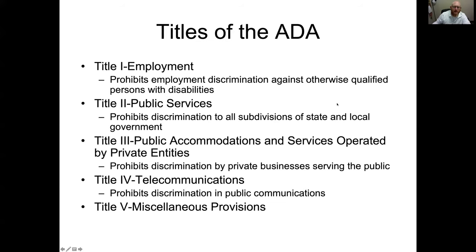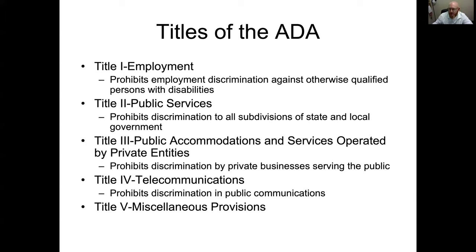There are five titles of the ADA. Title One covers employment — it prohibits employment discrimination for qualified people. Title Two covers public services — it prohibits discrimination by all subdivisions of state and local government. Title Three covers public accommodations and services operated by private entities — it prohibits discrimination by private businesses that serve the public. Note that private groups like a country club, where membership is a choice, may not be held accountable. Title Four covers telecommunications, and Title Five is miscellaneous provisions.